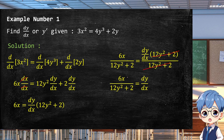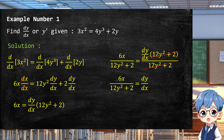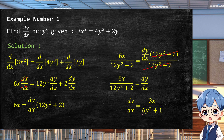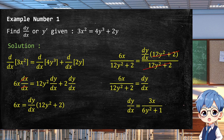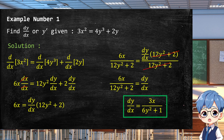The final answer should be in its simplest form. Since 6x over 12y² + 2 has a common factor of 2, we divide numerator and denominator by 2, giving us 3x / (6y² + 1). Using the symmetric property of equality, we write dy/dx = 3x / (6y² + 1) as the final answer for example one.